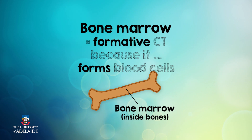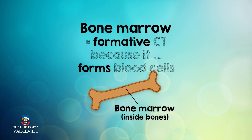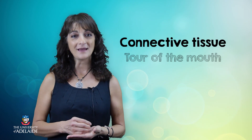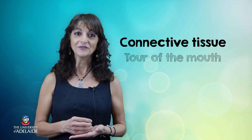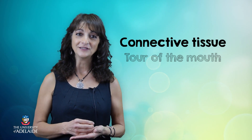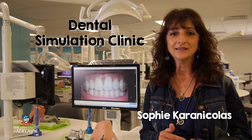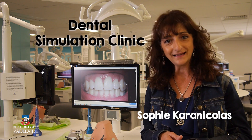Bone marrow, which is also a connective tissue, has a formative function — in other words, it forms new blood cells based on the body's needs. In this next segment we will take you on a tour of the mouth for a visual demonstration of the characteristics and function of connective tissue. We are currently standing in the dental simulation clinic, which is part of the dental school here at the University of Adelaide.